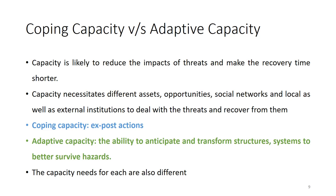When we talk about capacity, we need to differentiate between coping capacity and adaptive capacity. Coping capacity happens through exposed actions after the event. Adaptive capacity is the ability to anticipate and transform structures and systems to better survive the threats. The needs will be different depending on whether you are adopting coping capacity or adaptive capacity.